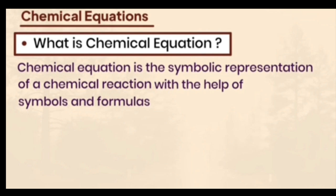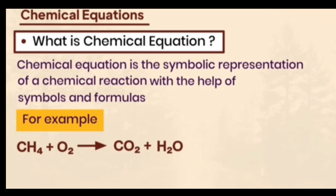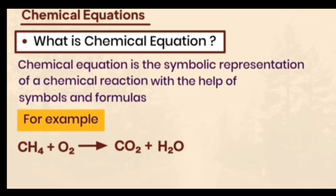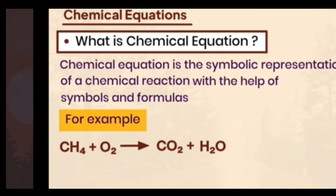A chemical equation is the symbolic representation of a chemical reaction using symbols and formulas. For example, methane (CH₄) plus O₂ combines to form CO₂ and H₂O — that is the symbolic form representing the chemical reaction, which is the chemical equation.